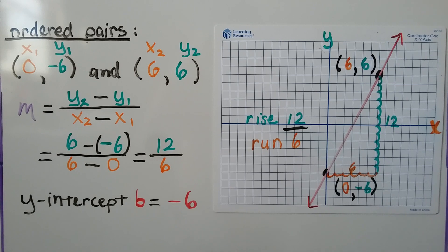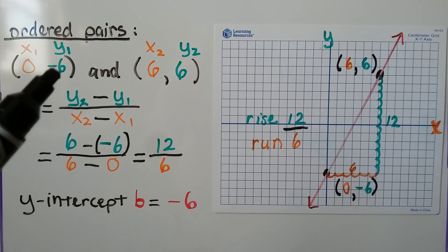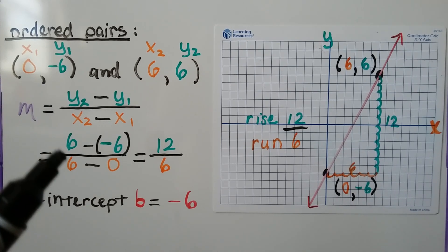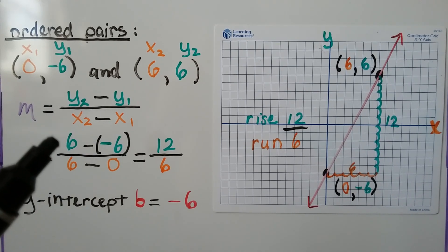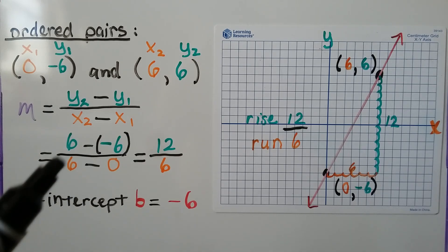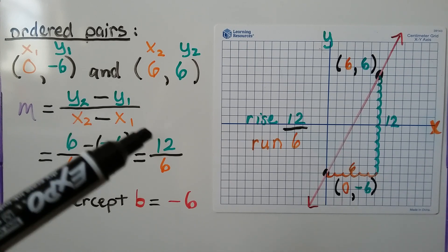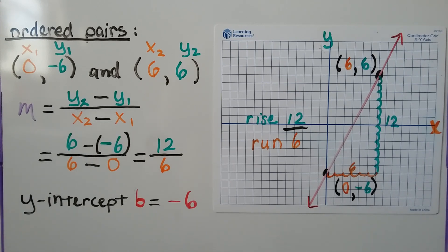We can use the slope formula and find the difference in the y-values over the x-values. We get 6 minus a negative 6 — and remember, when we subtract a negative, we add the opposite, so we're going to add a positive 6, which gives us 12. And 6 minus 0 is 6. Our slope is 12 over 6, which we can simplify to 2. The y-intercept b is negative 6.